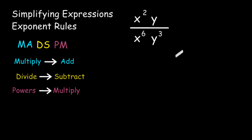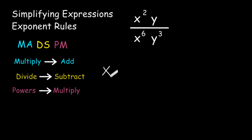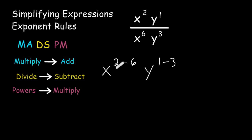Let's try another example. We have x squared multiplied by y divided by x to the sixth power times y cubed. Instead of writing it out in expanded form, let's apply the exponent rule: when dividing bases that are the same, subtract the exponents. Write x with the exponent at the top minus the exponent at the bottom: 2 minus 6. For the y variables, there is a 1 at the top, so take 1 minus 3. 2 minus 6 gives us negative 4, and 1 minus 3 gives us negative 2.